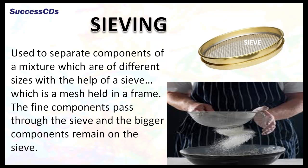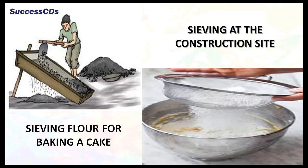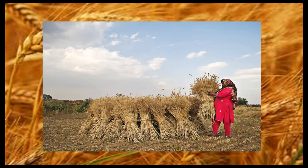Sieving is used to separate components of a mixture which are of different sizes, with the help of a sieve. A sieve is a mesh held in a frame. The fine components pass through the sieve and the bigger components remain on the sieve. Sieving is done at construction sites for removing pebbles and stones from sand, and also for sieving flour to remove husk while baking.